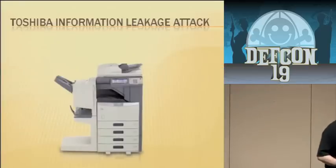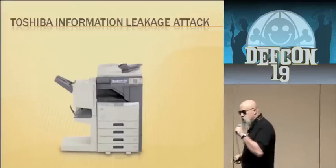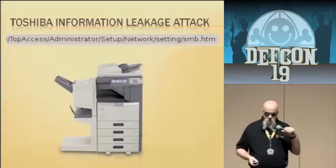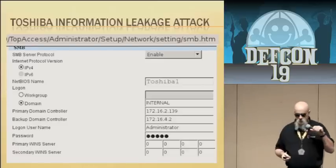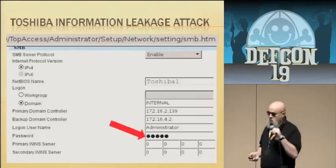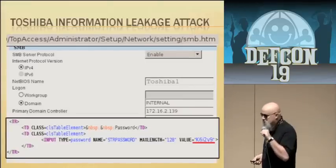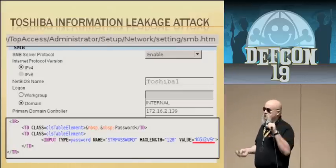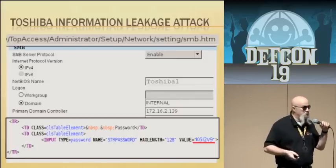On the Toshiba, once you bypass the password and navigate to the SMB settings — the Samba settings — take a close look at what's there. The device is set up to log on to the domain, and the logon name is 'Administrator.' By right-clicking on the password field and viewing source, you get the domain admin password. Pretty much game over at that point — and remember, this is all underneath the radar screen. You're just logging on with a web browser to a printer and right-clicking, and this device has given up your domain admin password.